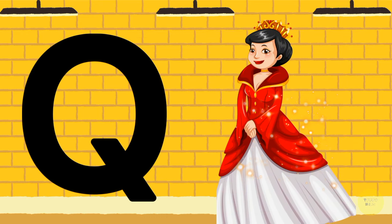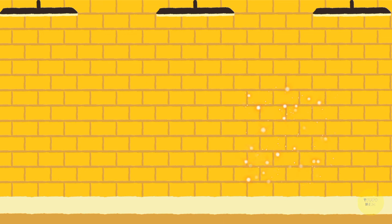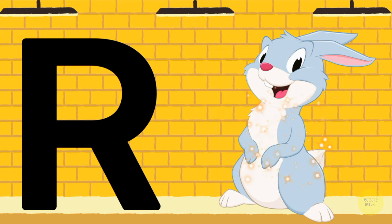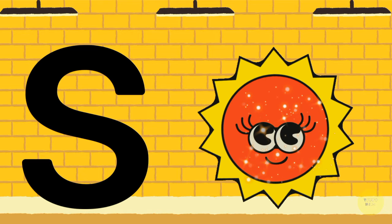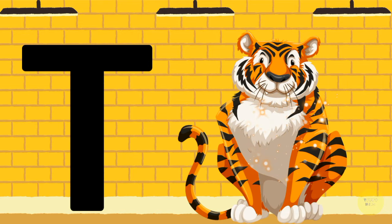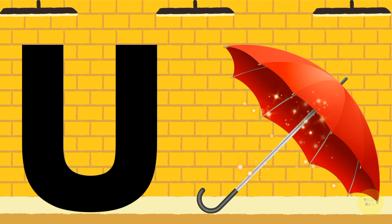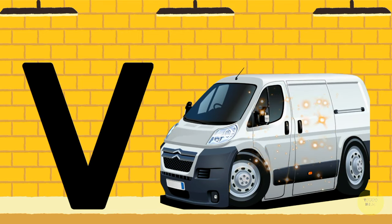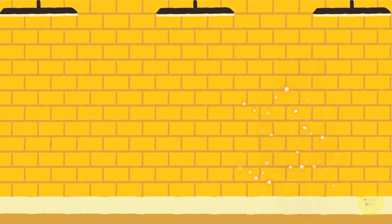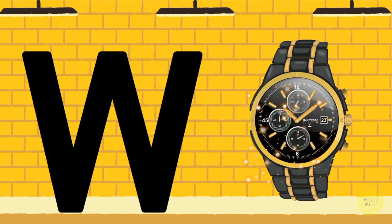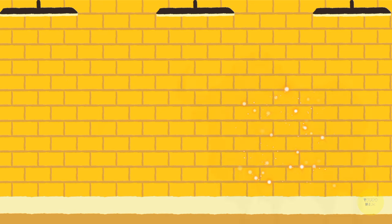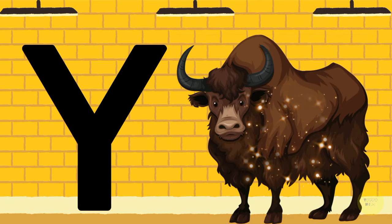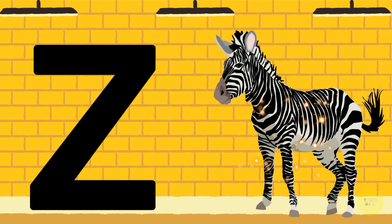Q for queen, R for rabbit, S for sun, T for tiger, U for umbrella, V for van, W for watch, X for x-ray, Y for yak, Z for zebra.